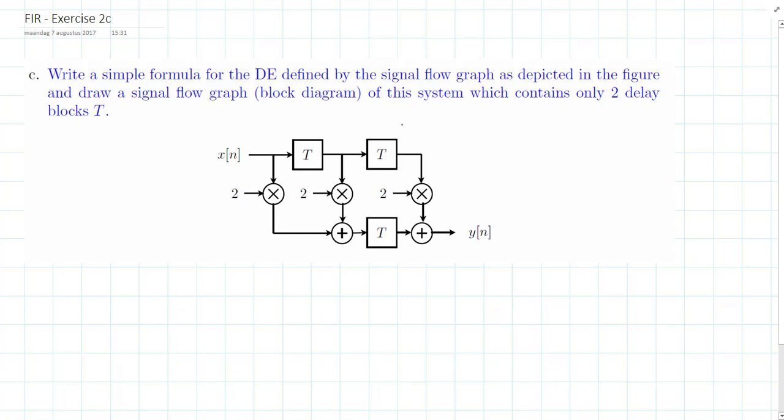Let's start off with determining all the intermediate signals in the block diagram. Right over here, since there is only one delay block, this will be equal to x[n-1]. And this one will be equal to x[n-2], since it's delayed twice.